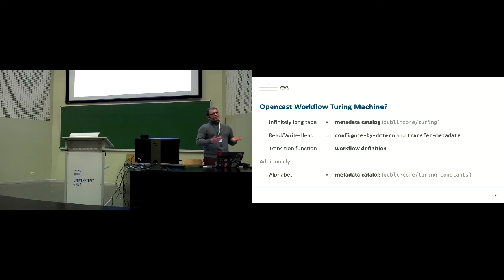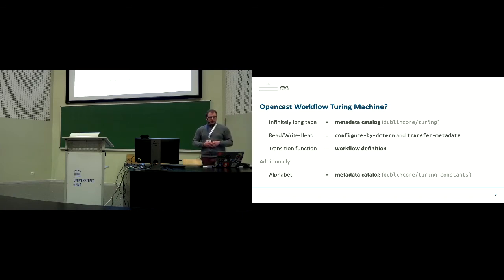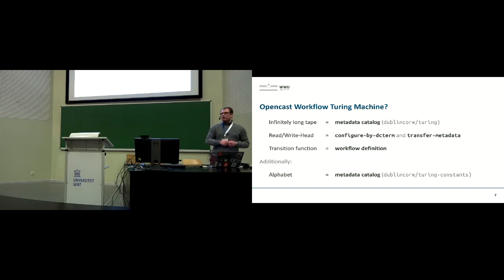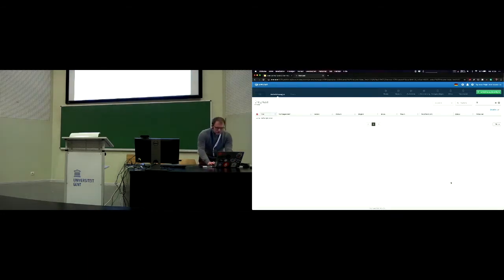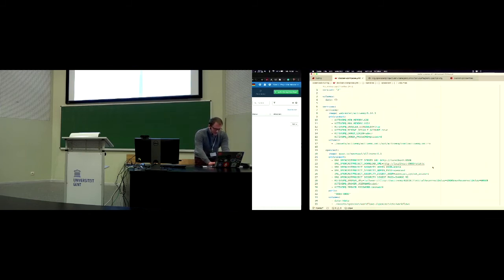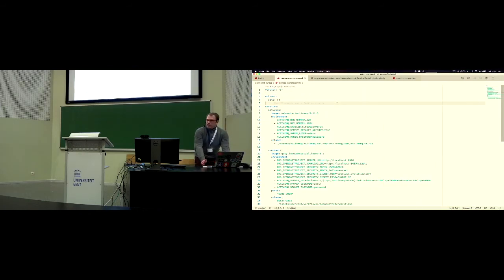Additionally, I include an extra metadata catalog that holds every symbol of the alphabet — in the case of number incrementation, that would be blank, zero, and one. Let me demonstrate using a normal OpenCast system started with Docker Compose, using the upstream OpenCast distribution with no code changes.